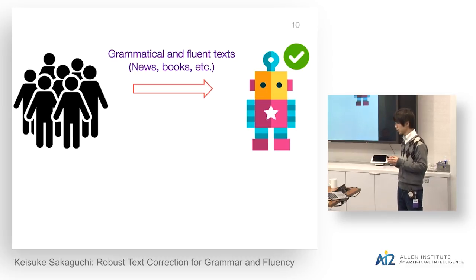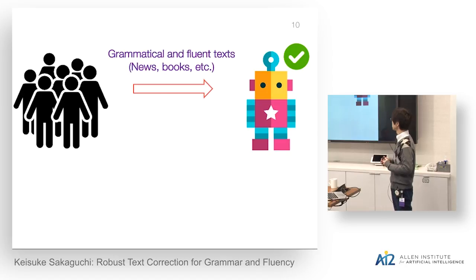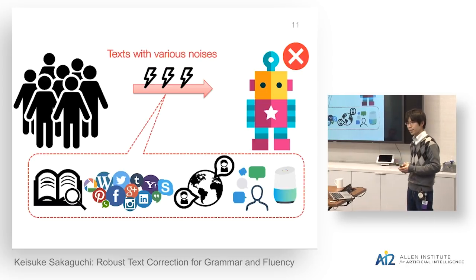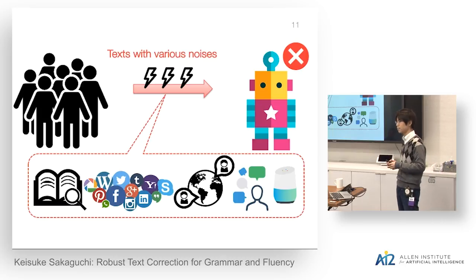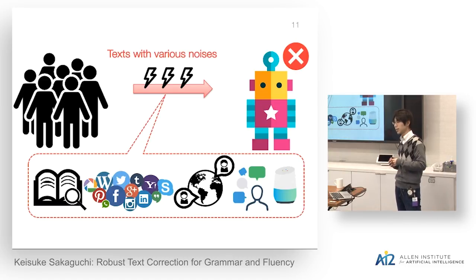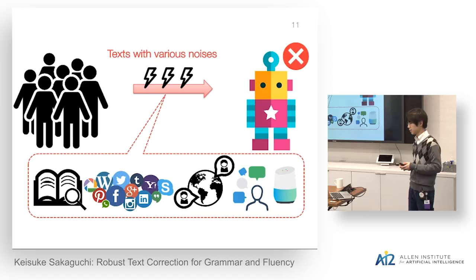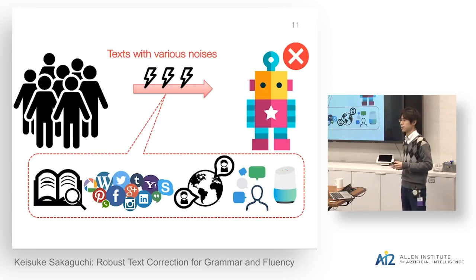In most cases, however, we assume that input texts are very grammatical and fluent — we extract text from news or books, and train models on clean data. But in the real world, there are many noisy texts. For example, OCR'd books with minor spelling and recognition errors, social media texts which are very popular with huge amounts of data, non-native speakers writing, and more recently texts from speech recognition from home speakers. All of these are not always grammatical and fluent, and model performance is always lower on these noisy inputs.